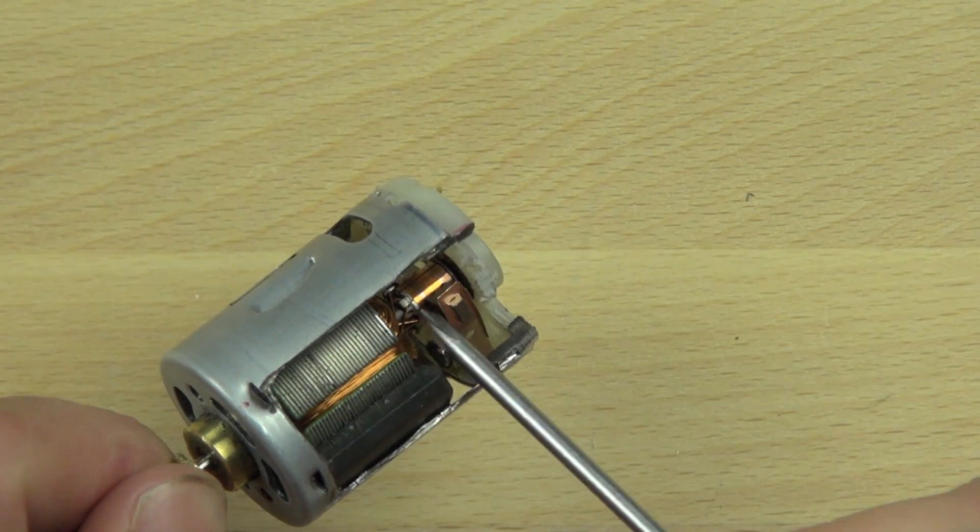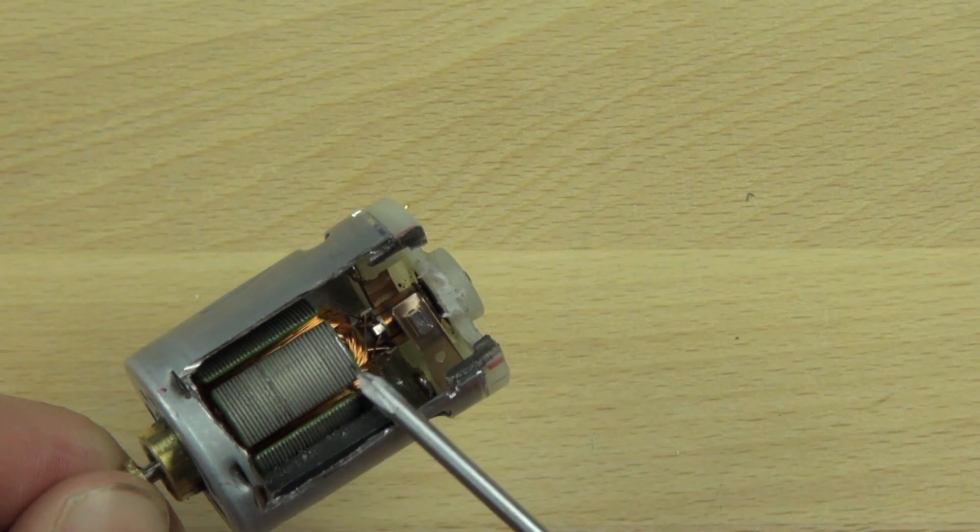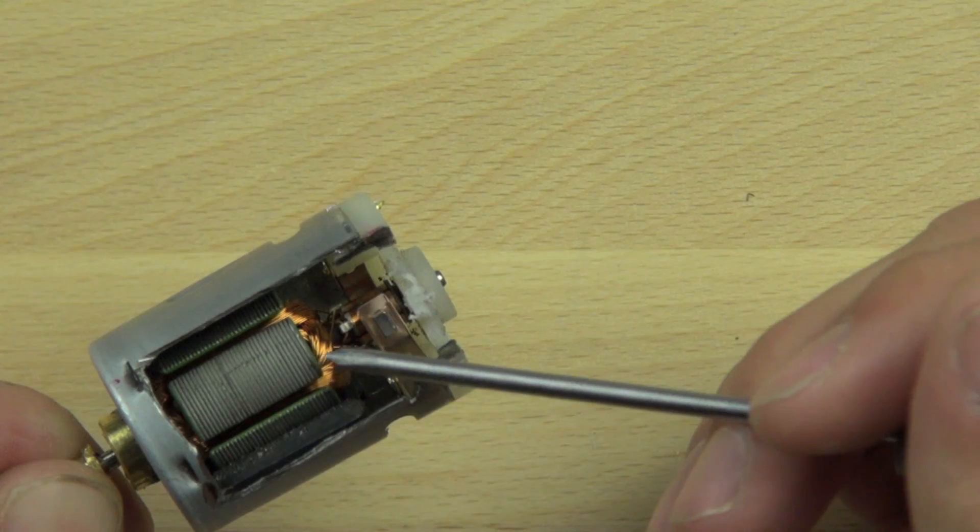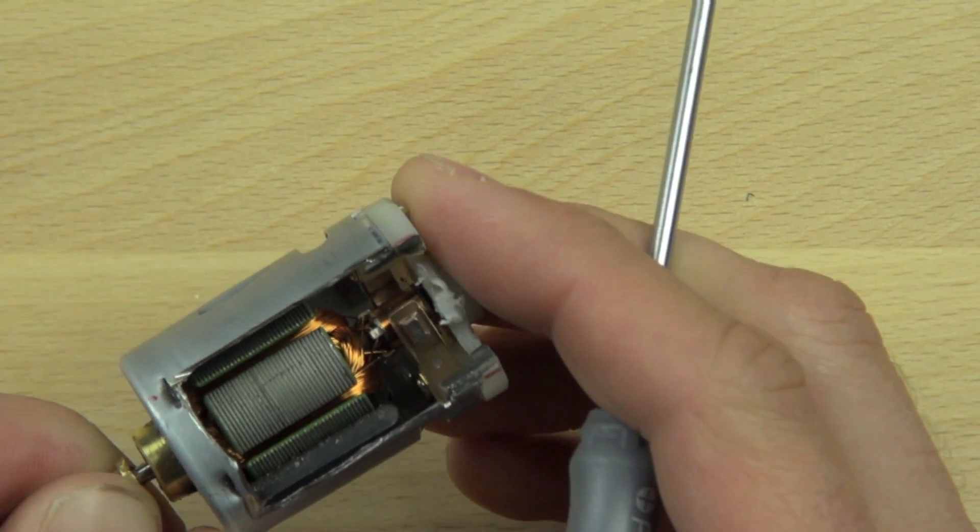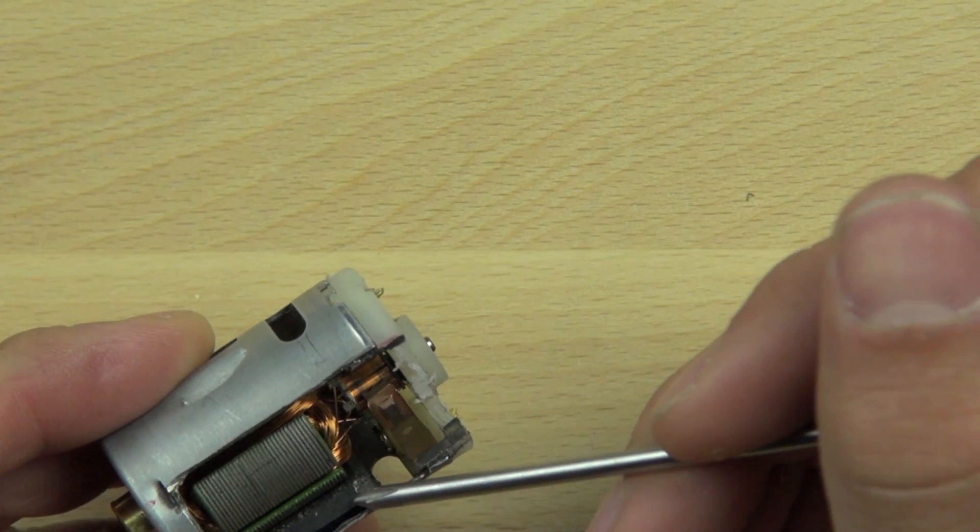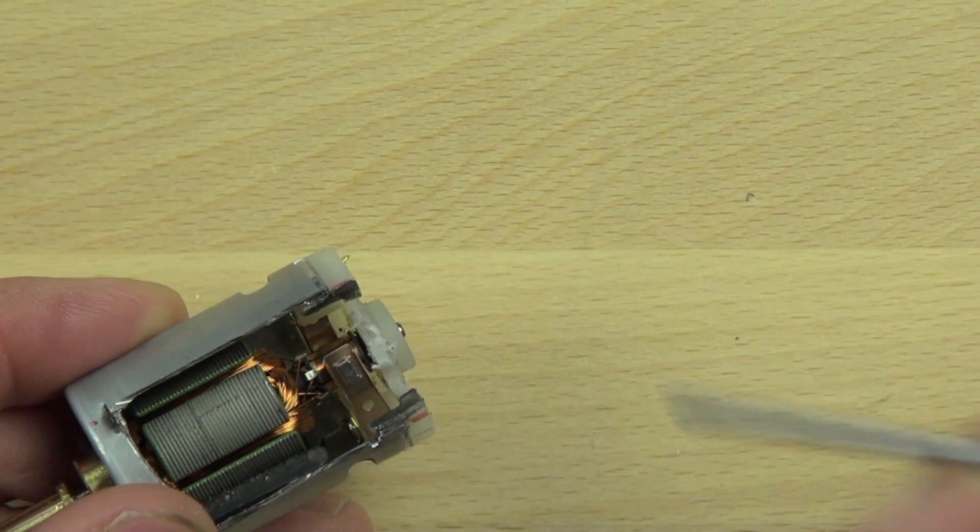So the power flows from the commutator down to these iron plates that are stacked up and wrapped with copper wire. And those iron plates act as electromagnets and they push against the permanent magnets.